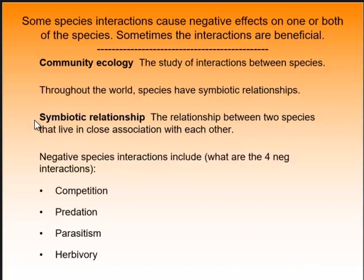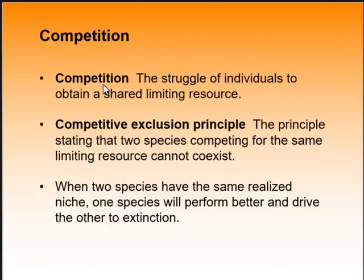A symbiotic relationship is one between two species, and any of these can be symbiotic relationships. Negative species interactions specifically are competition, predation, parasitism, and herbivory. When two species have the same realized niche, one species will perform better and drive the other to extinction.